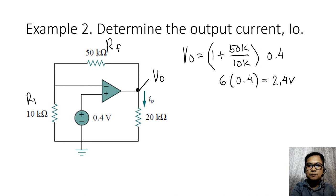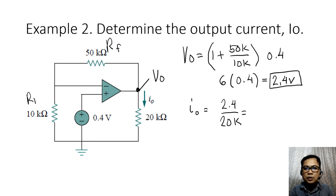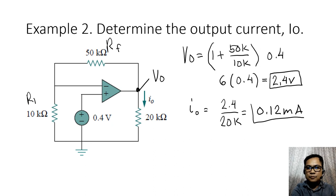So i out is simply 2.4 over 20k. A shortcut for this is that when you divide anything with kilo, the resultant is milliampere. So 2.4 divided by 20k is simply equal to 0.12 milliamperes. So this is our final answer, and that's it.